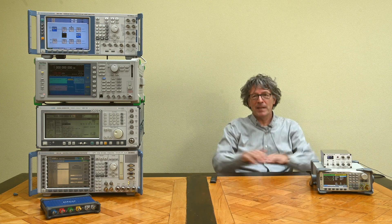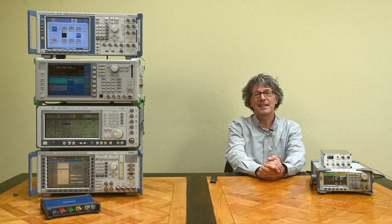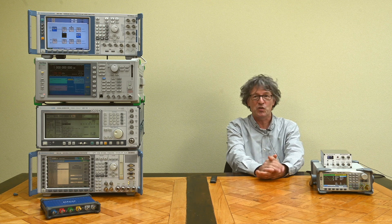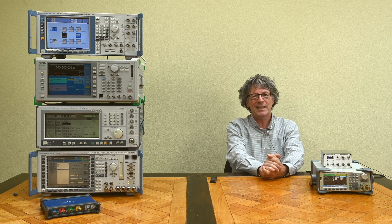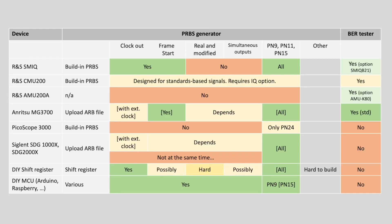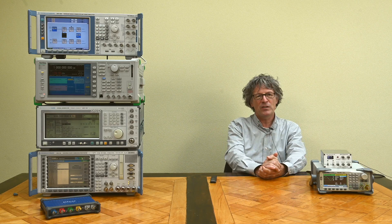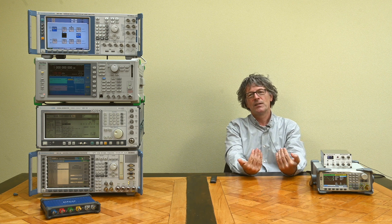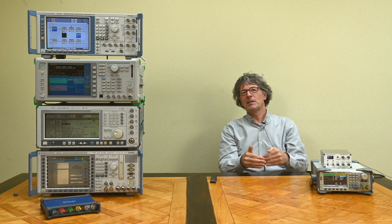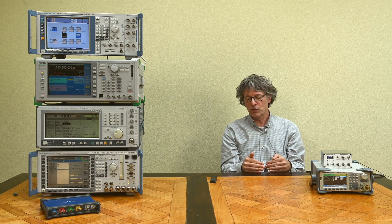Being here in the lab with so many devices that support BERT testing — which of them can actually do what I'd like to do? I made a table for this, which you can see on screen now, but I'll walk through each individual device so we build up the table together. We'll start with devices that have advertised BERT functionalities, then look at devices that don't advertise that functionality but might be used for it, and then look at do-it-yourself solutions.